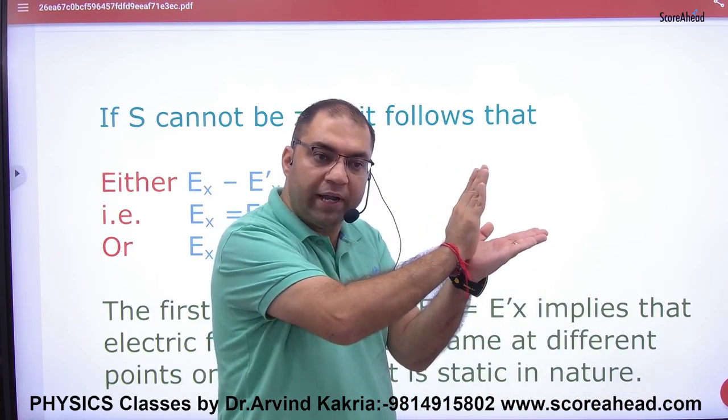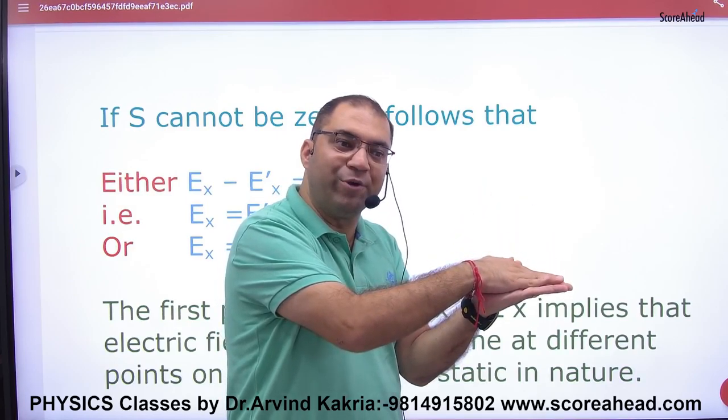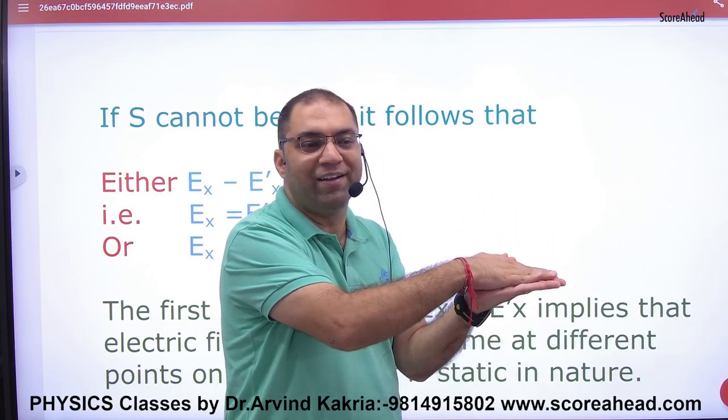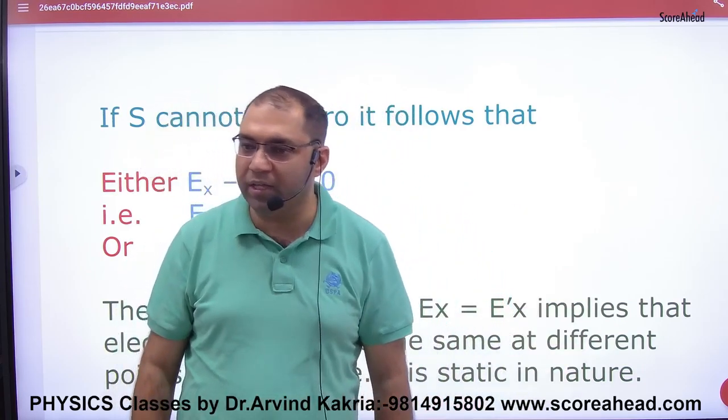So you will take E into 2 components. Where will it be? Perpendicular. So that's why it will be at 90 degrees. So that's why Electric field is at 90 degrees.